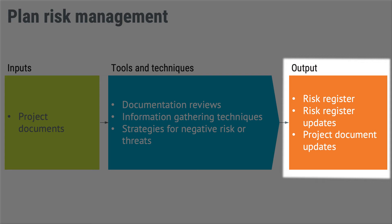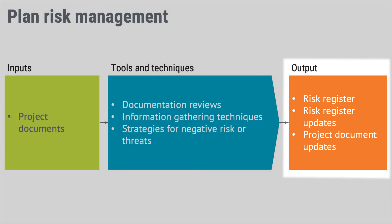Just to make it tangible: if you decide that an appropriate risk response is to source components from a second supplier, the task of sourcing those additional components would be put in your schedule as a task with someone's name on it. This is how your risk responses impact your project documents.